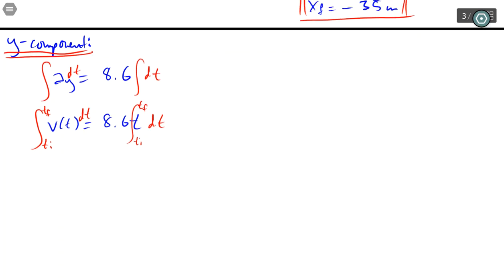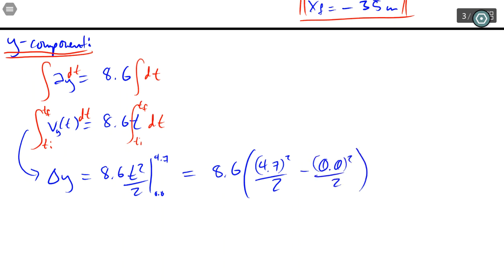From here, I'll take the integral one more time. Don't need to include the 8.6, and this one I'll take from ti to tf, which actually is from 0 to 4.7 seconds. This is actually the y, so this turns into delta y equals 8.6 times t squared over 2, evaluated from 0.0 seconds to 4.7. Once again, that becomes 4.7 squared; the other one you don't even have to write down.